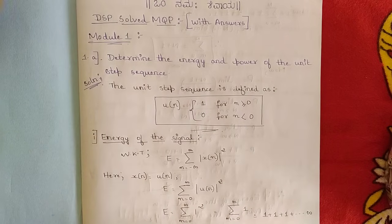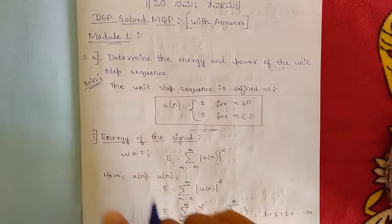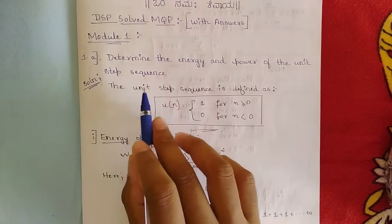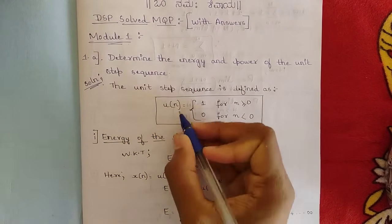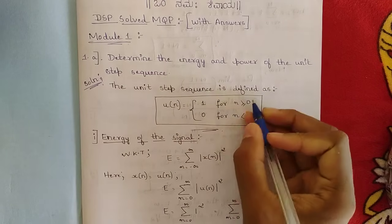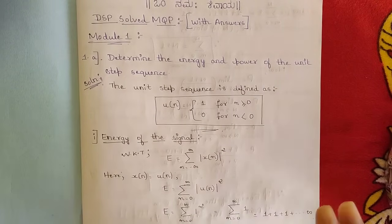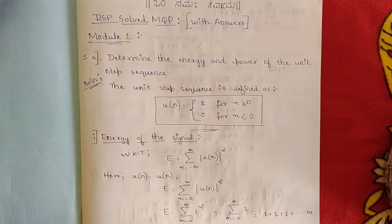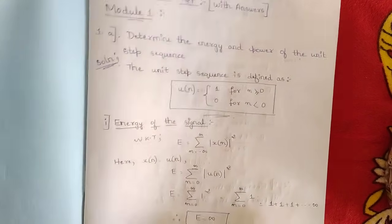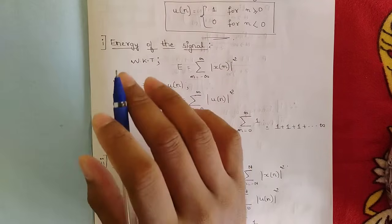This first question would be asked for around 5 marks. First, define the unit step sequence. The unit step sequence u(n) is defined as: it equals 1 for all values of n greater than or equal to 0 — that is, a constant amplitude of 1 — and it equals 0 for all values of n less than 0. This is the definition of the unit step sequence.